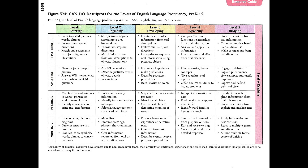For example, a level 2 beginning student in reading can locate and classify information, identify facts and explicit messages, and select language patterns associated with facts. When it comes to writing, they can make lists, produce drawings, phrases, short sentences, notes, and give information requested from oral or written directions.